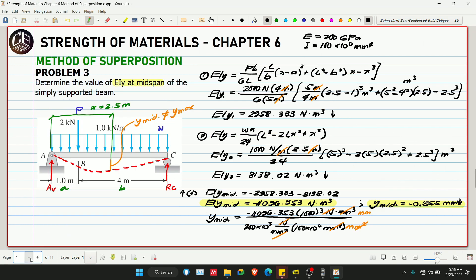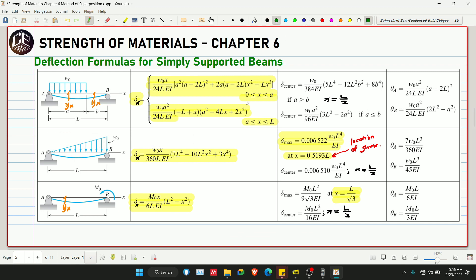Next, for the triangular load, the load is inverted, so when we take the midspan deflection, this is where X is located. For the triangular load equation, EIY is W times X over 360L multiplied by 7L to the fourth minus 10L squared X squared plus 3X to the fourth.